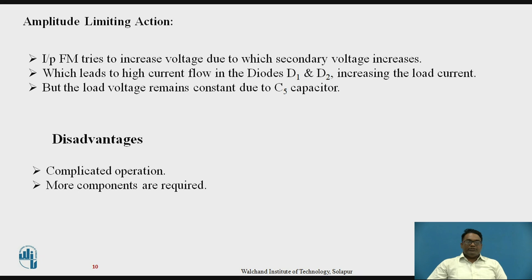The amplitude limiting action is provided by capacitor C5. When the FM input tries to increase the voltage, the secondary voltage increases, which leads to a high current flow through diodes D1 and D2.